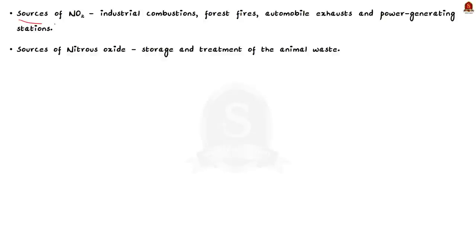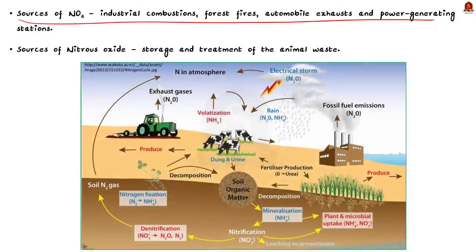But what about the sources of these nitrogen oxides? Generally, they are released from industrial combustions, forest fires, automobile exhausts, and they are released from power generating stations. And particularly, if we take nitrous oxide, that is N2O, it is emitted during storage and treatment of the animal waste. So, we can say that nitrogen oxides are released by animals.